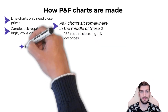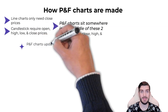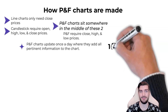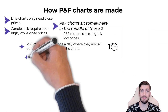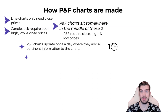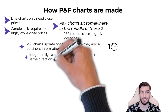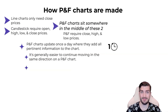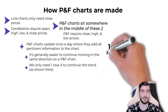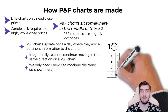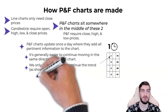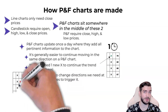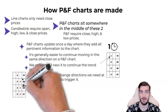Point and figure charts update themselves once a day, meaning the high, low, and close for the day are recorded and any changes are made to the chart. In general, it's much easier to continue going in one direction than it is to change directions. For example, if we are in a column of X's, all we need is one new box on top to continue that column. But if we wanted to flip into O's, we would need at least three boxes downward to start a new column of O's.